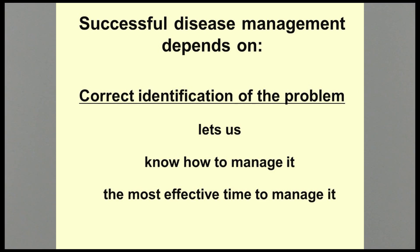To successfully manage plant diseases, or any pest for that matter, we need to first correctly identify the cause of the problem. Once we know if a pathogen or insect is causing the problem, we can determine the best management techniques and the most effective time to use them. We can also determine if the problem might be caused by an environmental or non-living factor, and then we wouldn't even have to use any kind of pesticides at all.